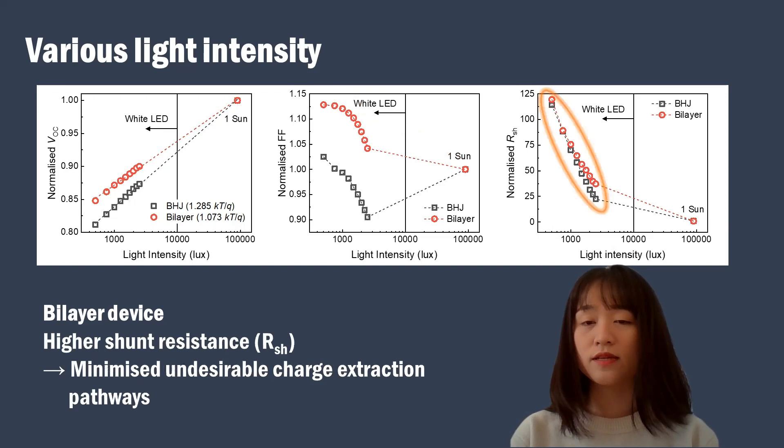Shunt resistance is one of a greatly important parameter for indoor photovoltaics, which is related to leakage currents through the devices. Here, bilayer devices show higher shunt resistance regardless of light intensity, indicating minimized undesirable charge extraction pathways in bilayer devices.